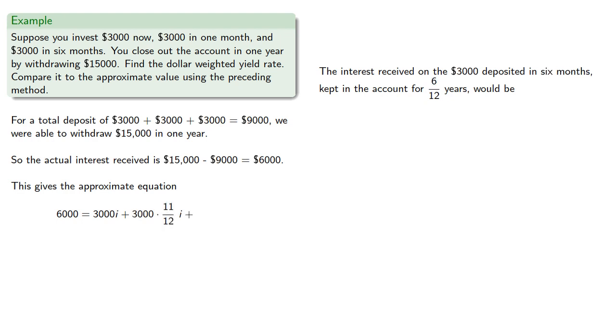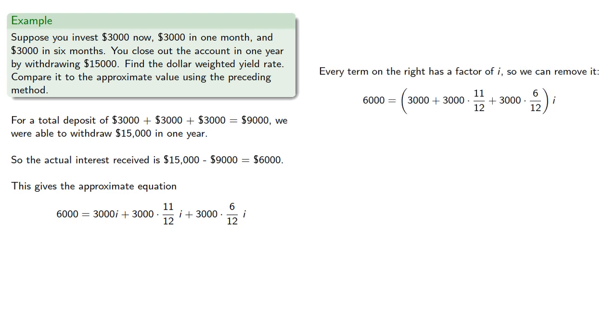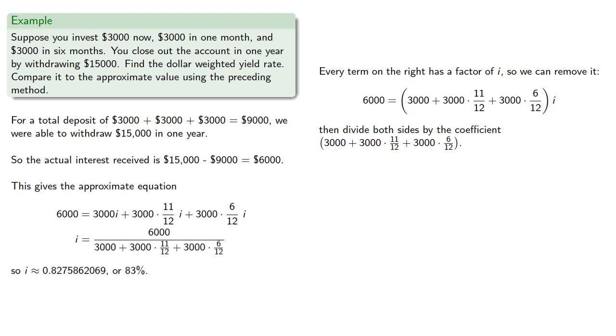The interest received on the $3,000 deposited in six months, kept in the account for 6 twelfths years, would be approximately... Which gives the remainder of the interest. So notice that every term on the right has a factor of i, so we can remove it. Then divide both sides by the coefficient. And find that our approximate interest rate is about 83%.